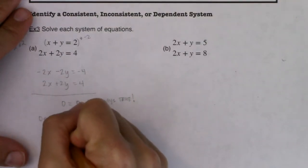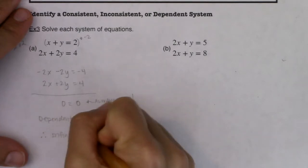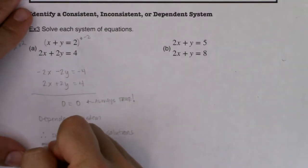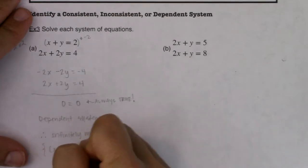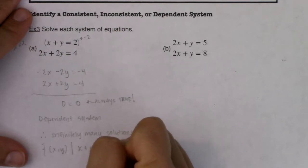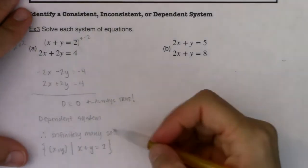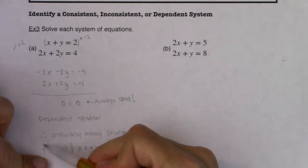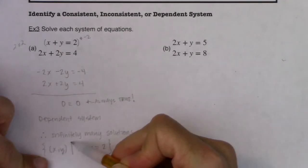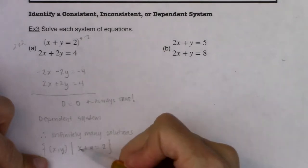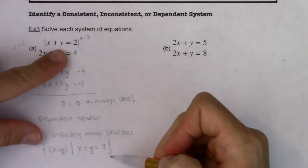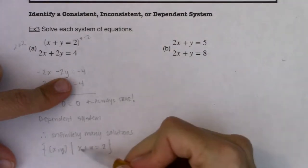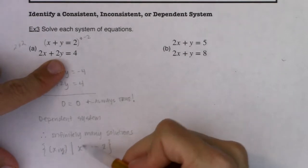We have infinitely many solutions, and technically, if we want to write the solution set, we would say it's the set of all ordered pairs such that x plus y is equal to 2. The squiggles represent the set, x comma y represents ordered pairs, the vertical bar means 'such that,' so this is the set of all ordered pairs x, y such that x plus y equals 2 — meaning I'm on this first line. You also could have written 2x plus 2y is equal to 4, but if there's an ordered pair on this line, it's automatically on the second line.